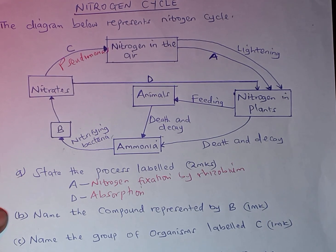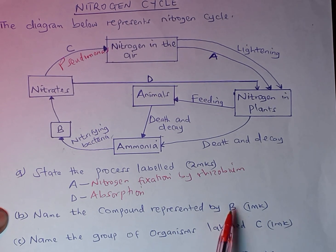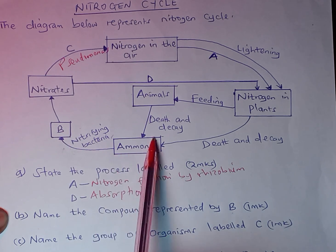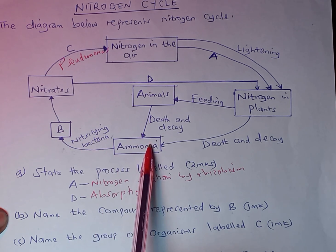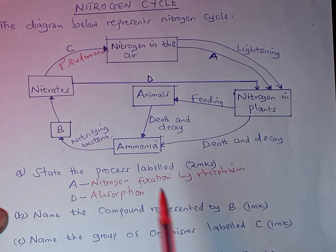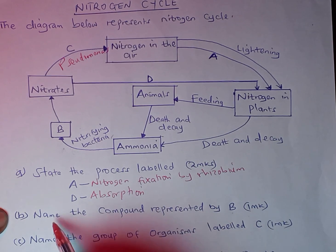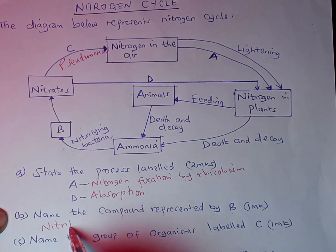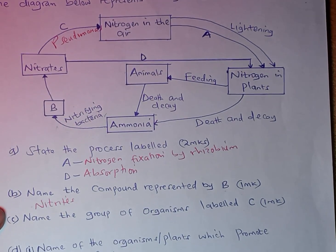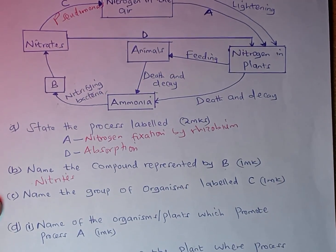Part B: name the compound represented by B. B is a product obtained from ammonia. Remember, ammonia is converted into nitrates.